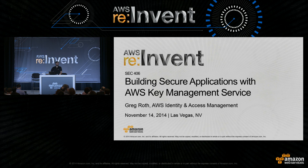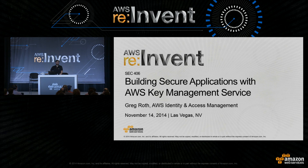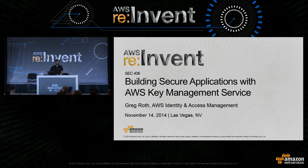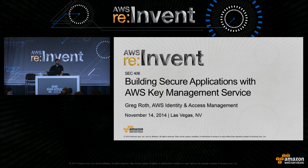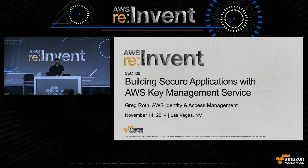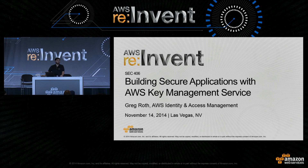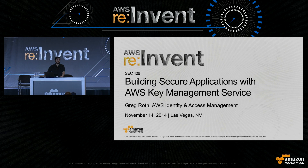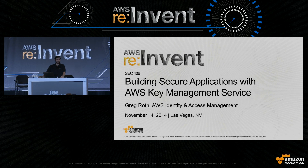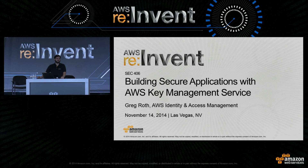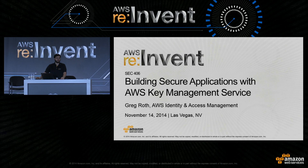Hello. Welcome to one of the final sessions of re:Invent this year. I'm Greg Roth, with the Identity and Access team. I'm one of the engineers that designed large parts of the AWS Key Management Service and I'd like to talk to you about using it in some of your applications today.